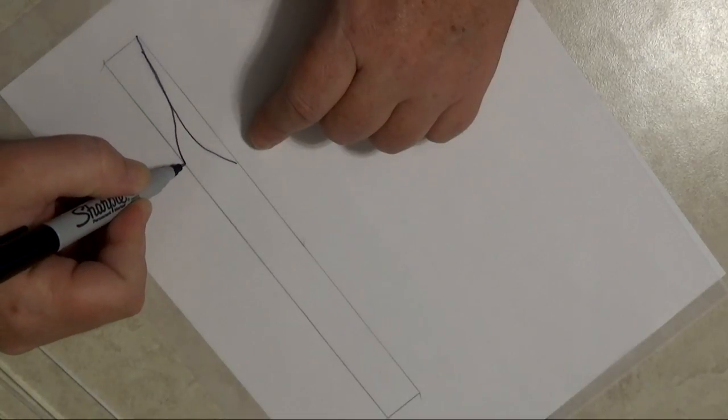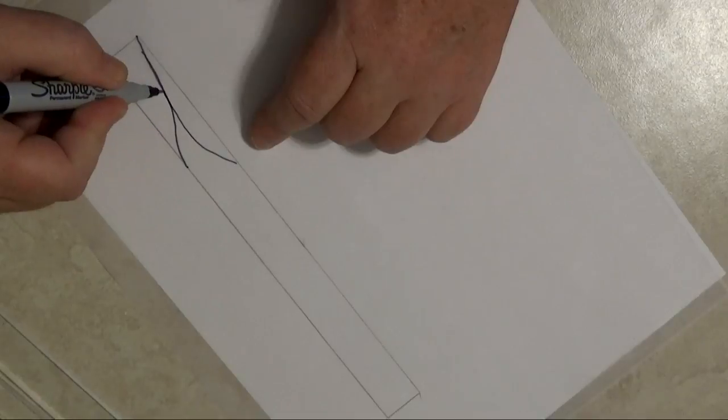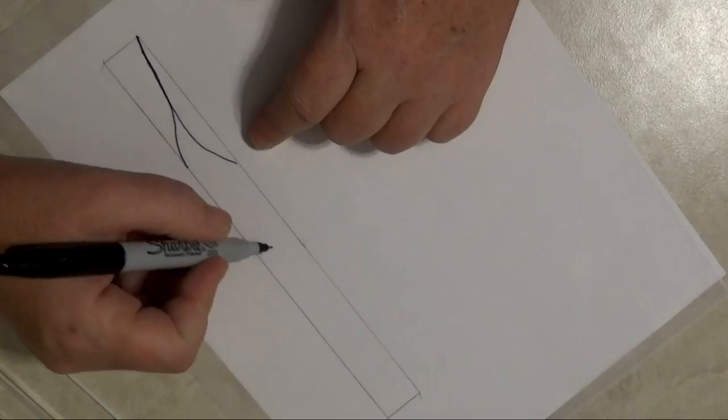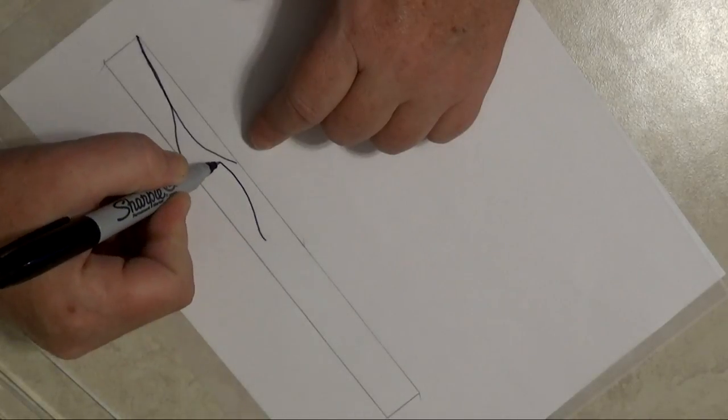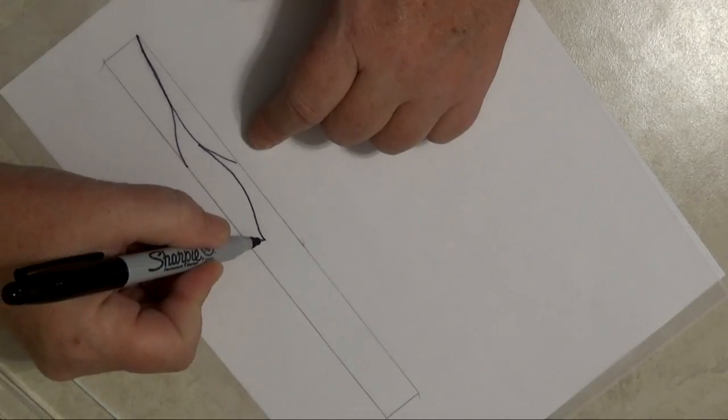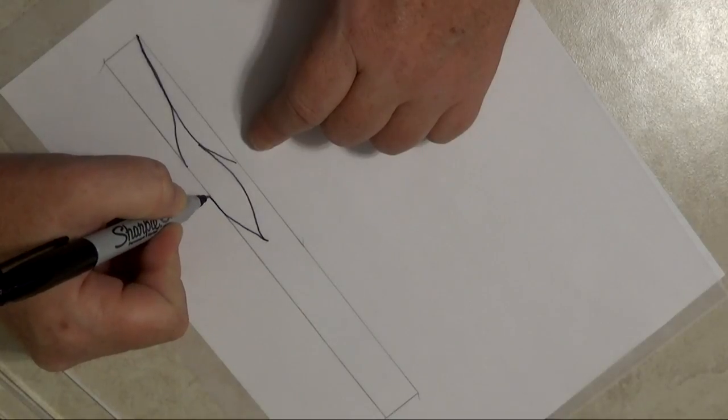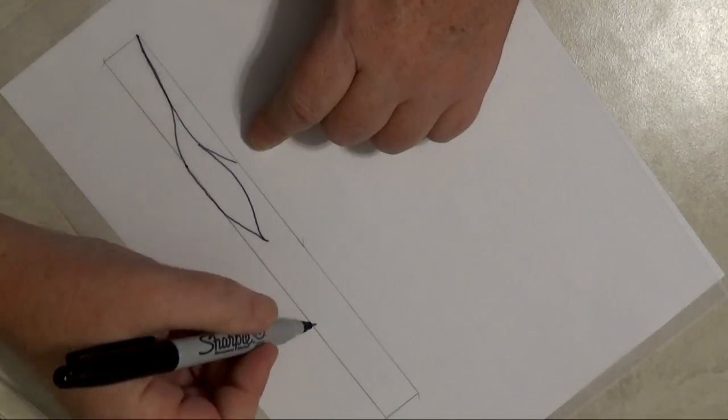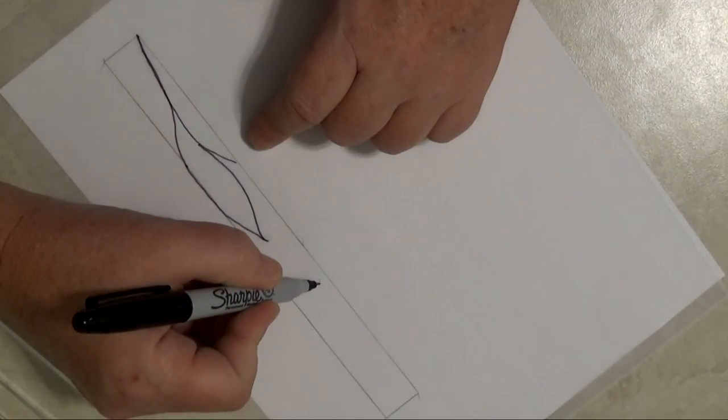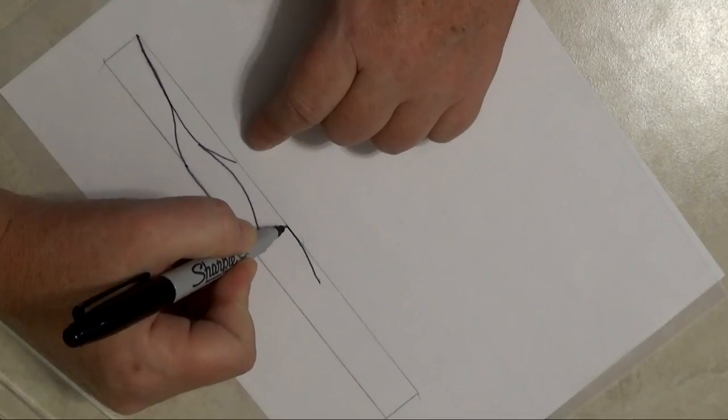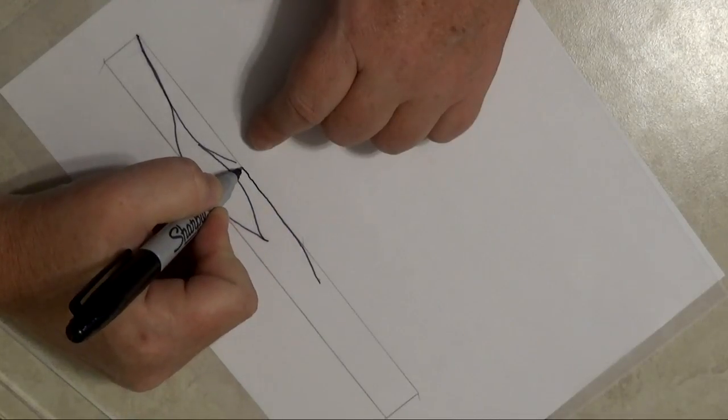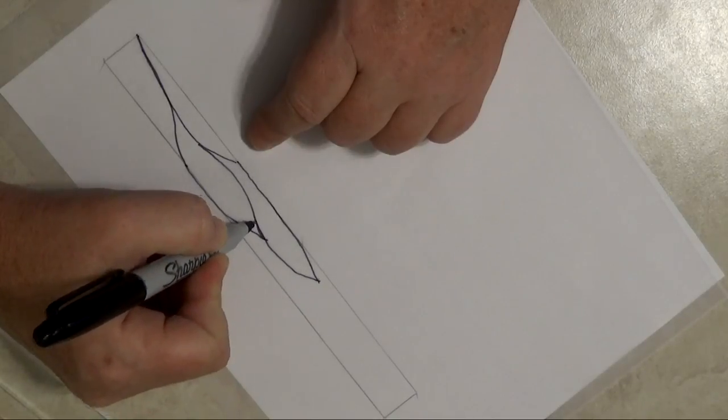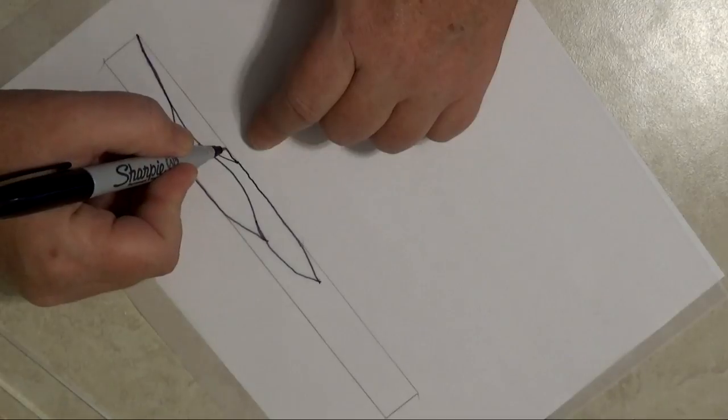I'm just going to go ahead and begin drawing. Now you could trace your design in pencil first if you'd like, but I'm trying to keep with the spirit of Inktober. The idea behind Inktober is that you draw in ink, and if you make what you feel is a mistake, you somehow work it into the design.